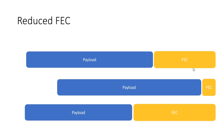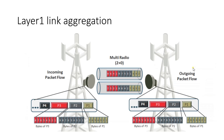The next interesting topic is Layer 1 Link Aggregation, also called Adaptive Bandwidth Control (ABC). In this technique, multiple carriers exist between Site A and Site B. Packets coming from higher-order layers are converted into bits and bytes and then equally distributed among the multiple carriers — this is the best way to optimize the use of multiple carriers.